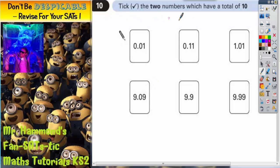Question 10. Tick the two numbers which have a total of 10. Now the problem you've got here is you could tick any two of these six numbers, but there's only one combination which will actually give you a total of 10.